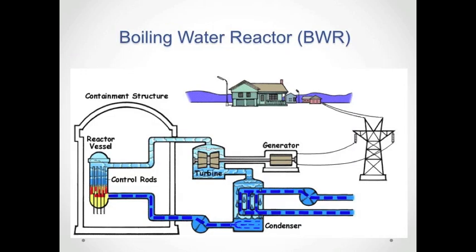This diagram illustrates a boiling water reactor, or BWR. In the boiling water reactor, the reactor vessel on the left within the containment structure contains nuclear fuel. The nuclear fuel undergoes a process of fissioning, which releases energy in the form of heat. The heat heats the water in the vessel, causing it to become steam. The steam then strikes the blades of the turbine.